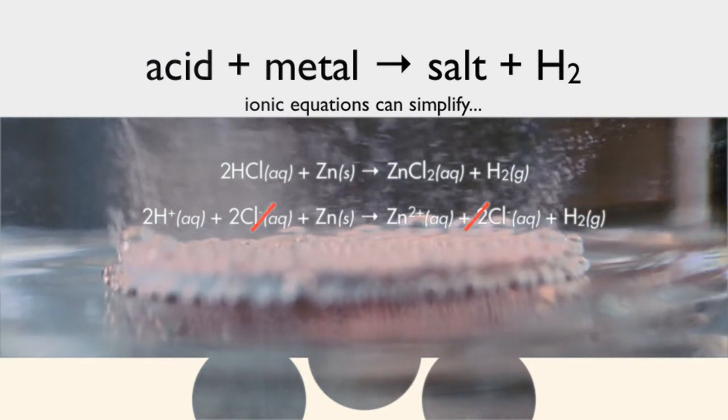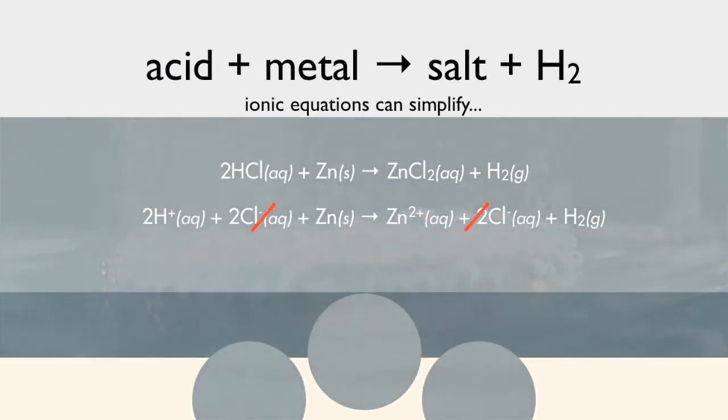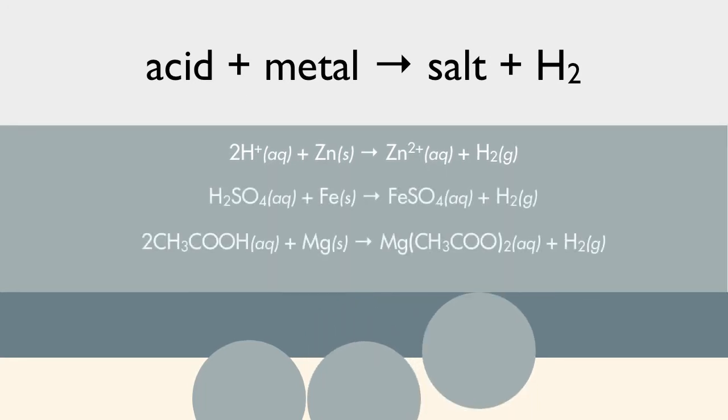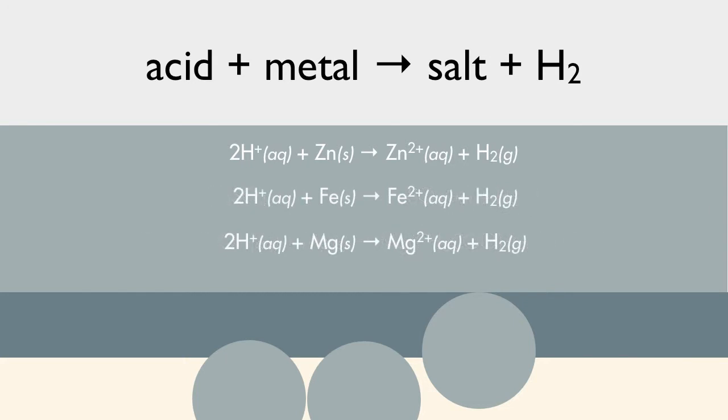And you'll see that the common ions, chloride ion is the same on left and right, so they cancel each other out. And we get a simpler equation. Hydrogen ions plus zinc gives zinc plus and hydrogen gas. We can see that the same logic applies to our other two examples. And they simplify to basically the acid plus the metal gives the metal ion plus hydrogen gas.